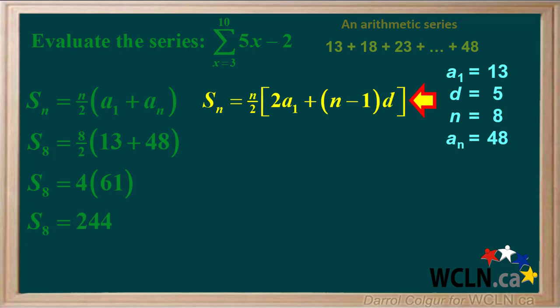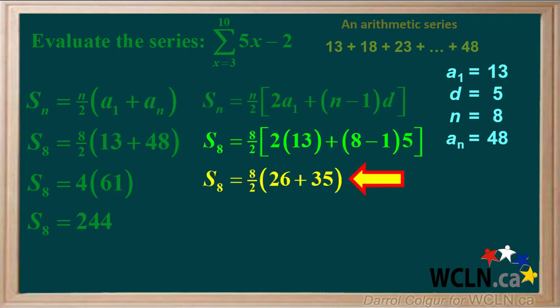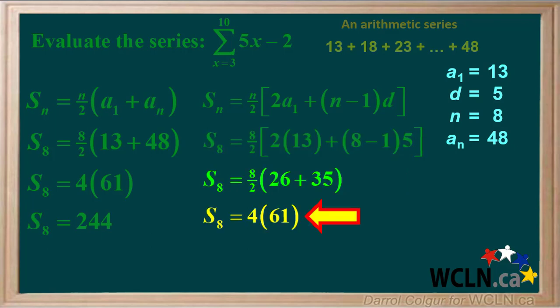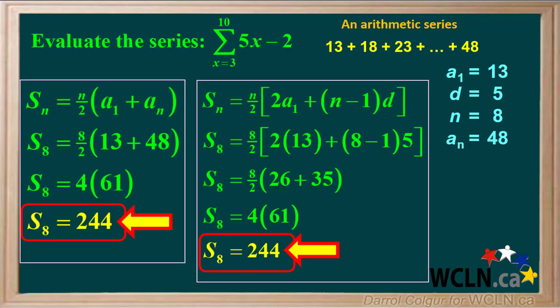This is the other equation we can use to find the sum of an arithmetic series. Putting in 8 for n, 13 for a1, and 5 for d: 2 times 13 is 26, and 7 times 5 is 35. 8 over 2 equals 4, and 26 plus 35 equals 61. 4 times 61 is equal to 244. We've now evaluated the sum using both equations for the sum of an arithmetic series, and in both cases the sum is 244.